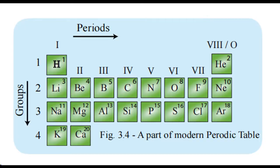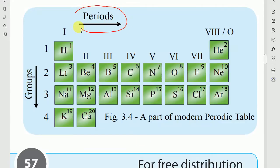In this grade, only the elements with atomic number from 1 to 20 are studied in the periodic table. Horizontal rows are called periods, while vertical columns are known as groups.